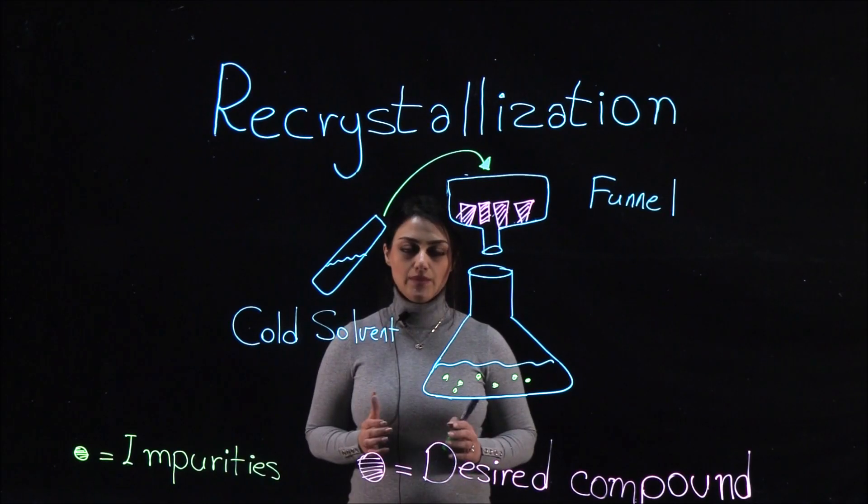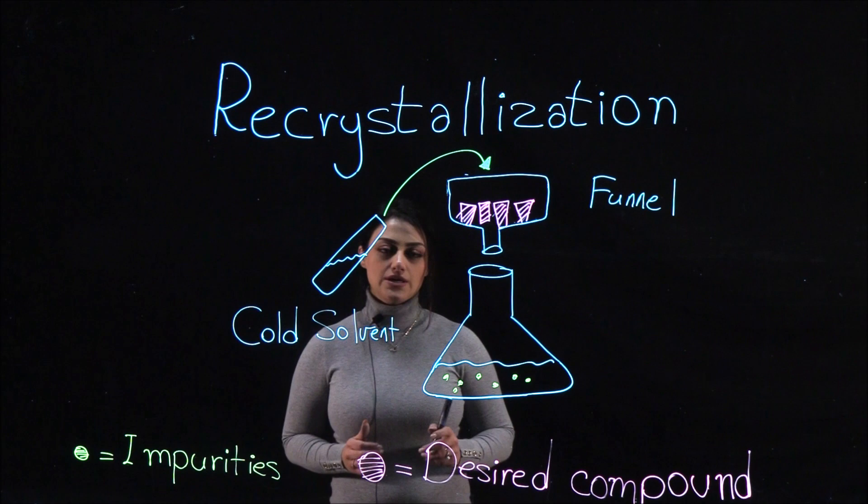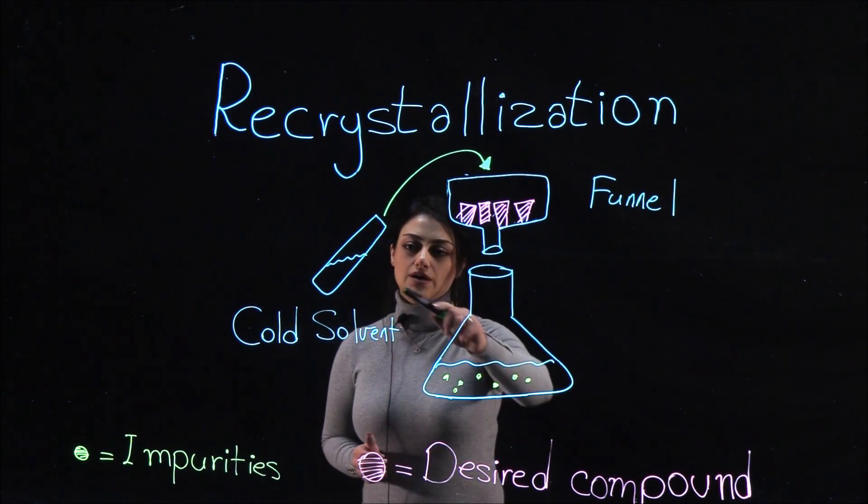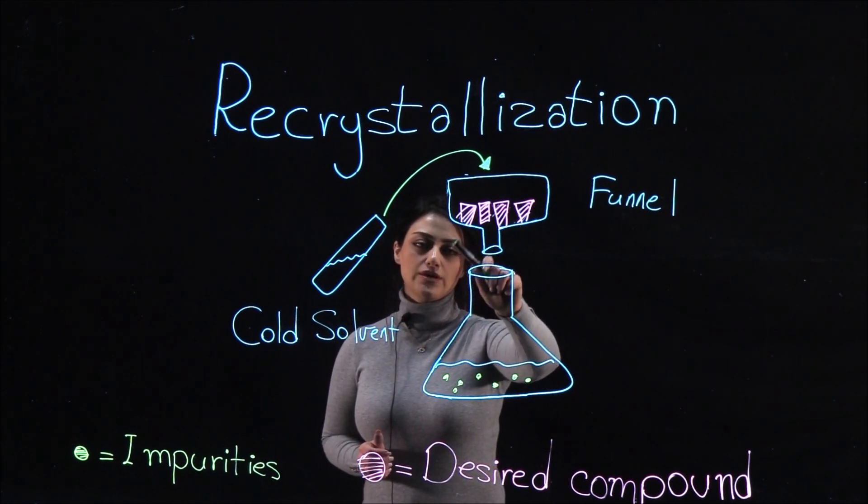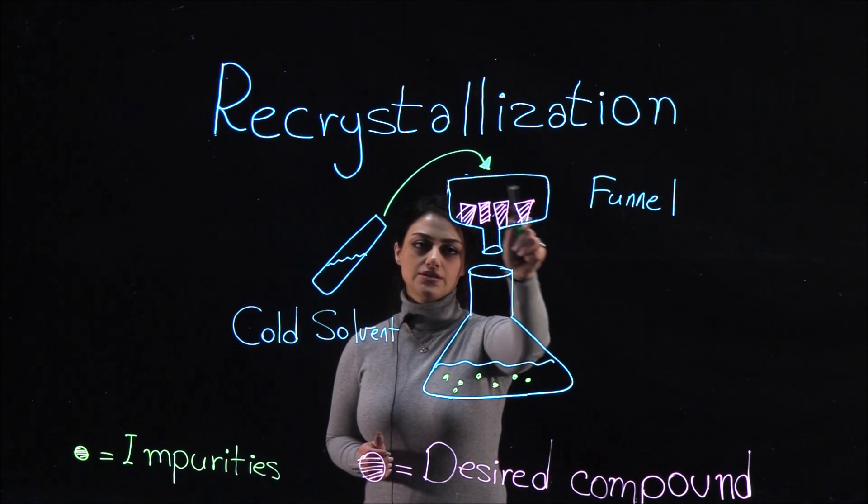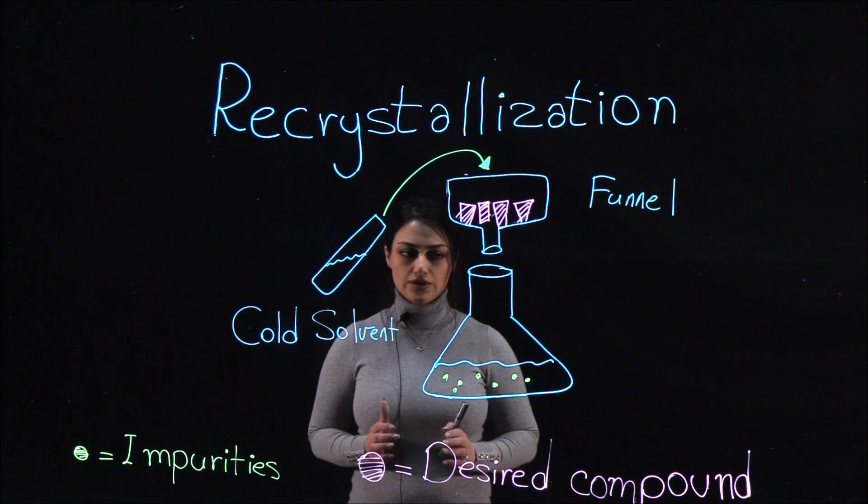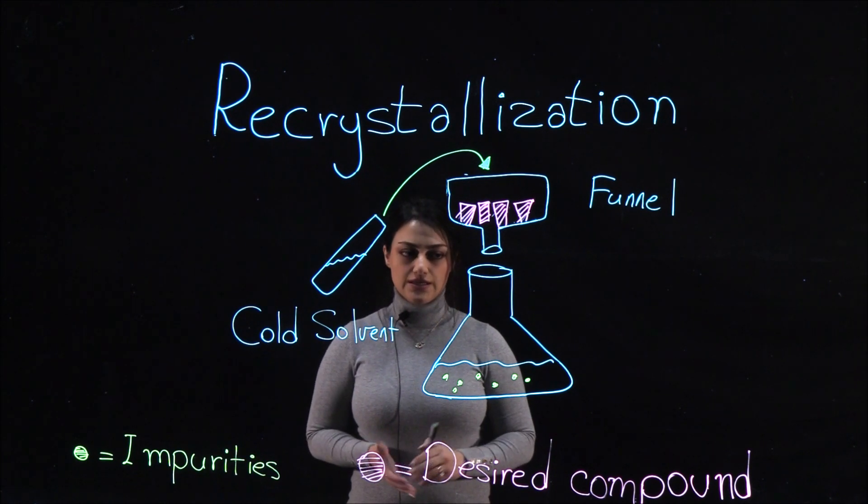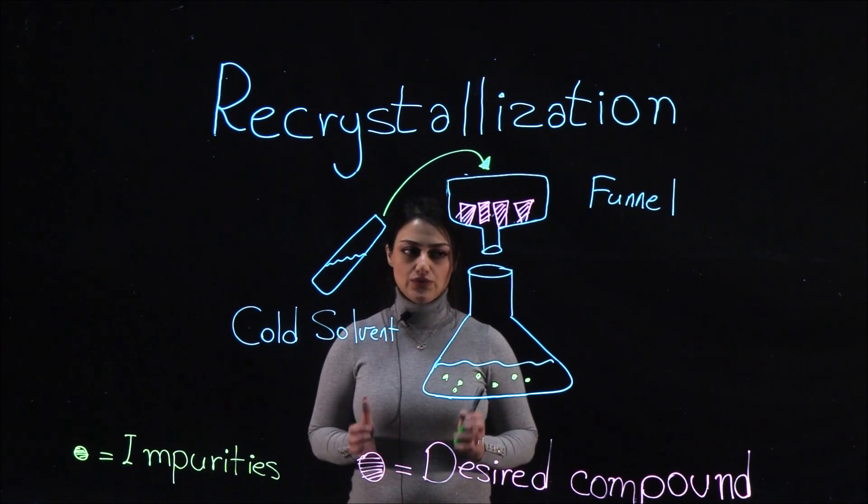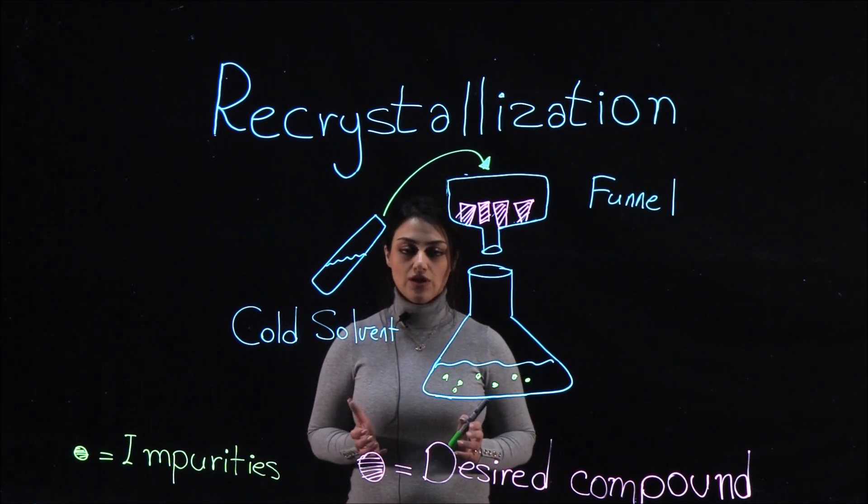The compound is then rinsed with a small amount of cold solvent to remove impurities on the surface of the crystals. The solvent is cold to reduce the amount of crystals that gets pulled back into solution. This step to remove impurities is worth the small amount of yield that might be lost.